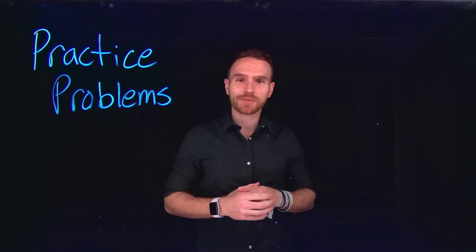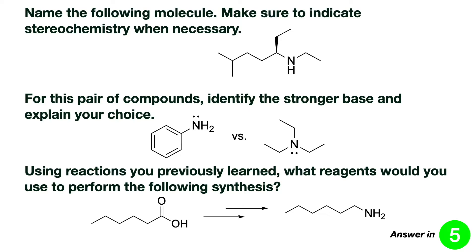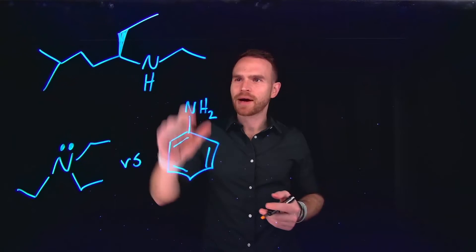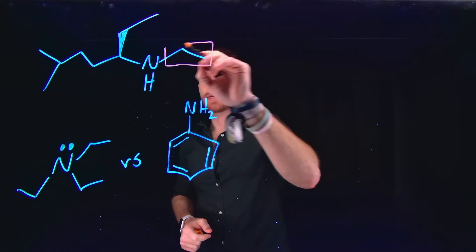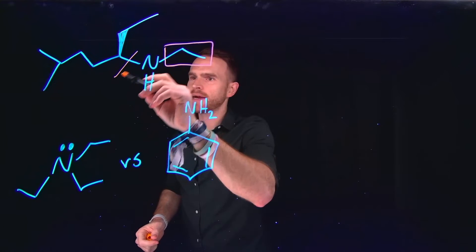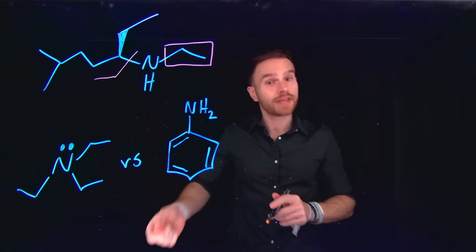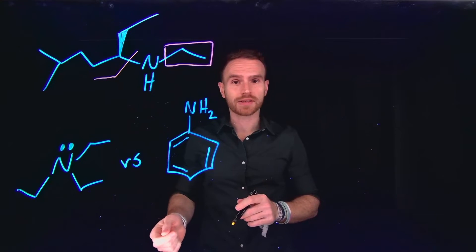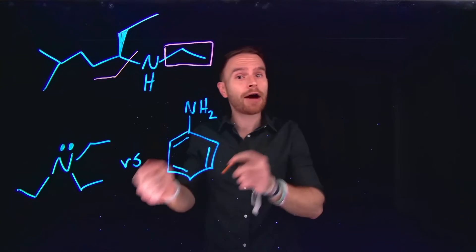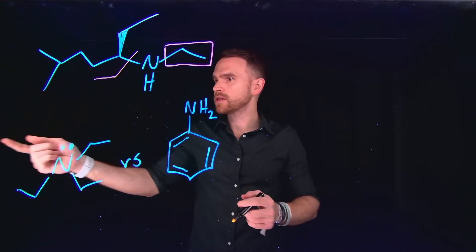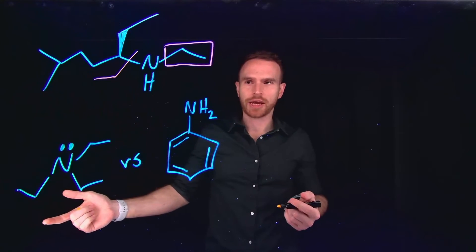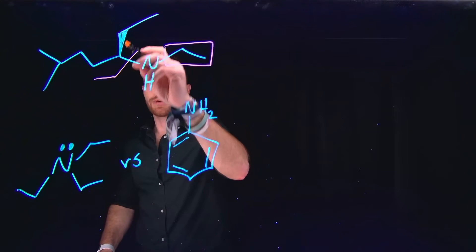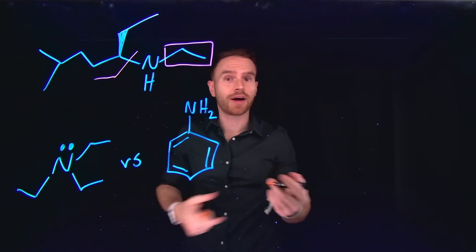Now let's try some practice problems to gauge your learning, then resume the video for a full explanation of the answers. To name the first compound, I'm going to begin by identifying all the different alkyl groups coming off the nitrogen atom. I see that there is an ethyl group, and then a relatively complicated alkyl chain. This means it's going to be an alkanamine because this is a complicated alkyl chain. The next thing is that there is stereochemistry, so I'm going to need to identify it as R or S.